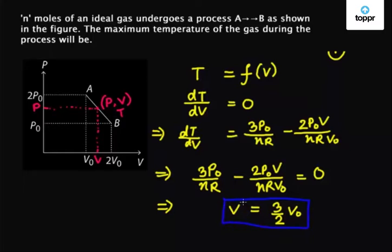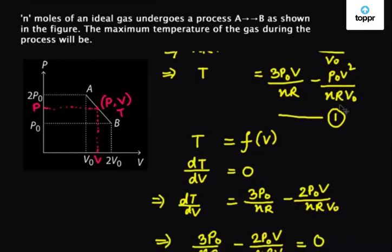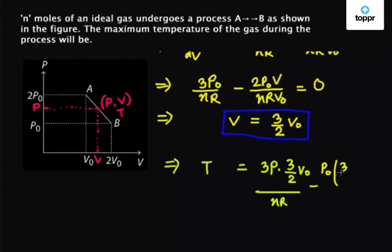Now we substitute this value of V in the temperature function which was T equals 3P0V / nR - P0V² / (nR·V0) to get T equals 3P0(3V0/2) / nR - P0(9V0²/4) / (nR·V0).